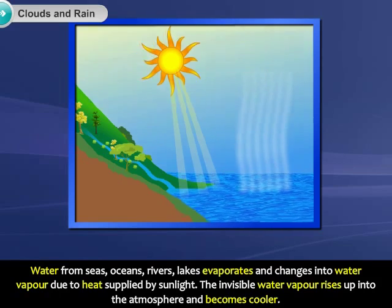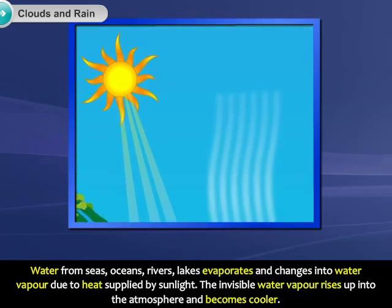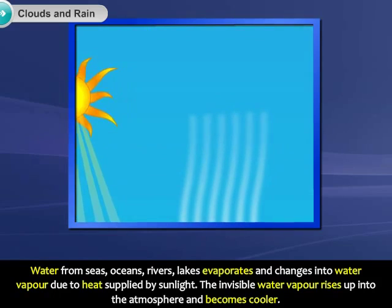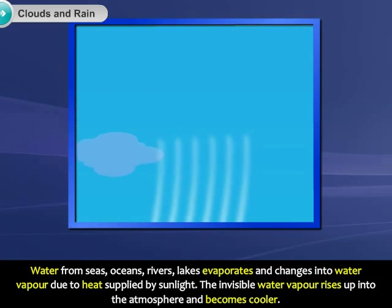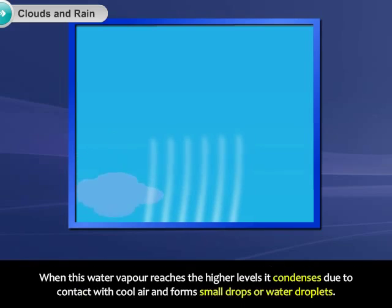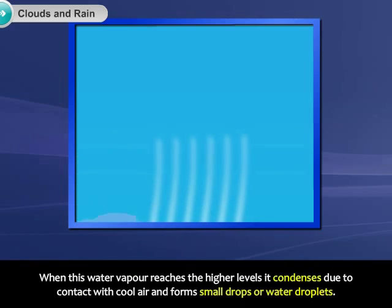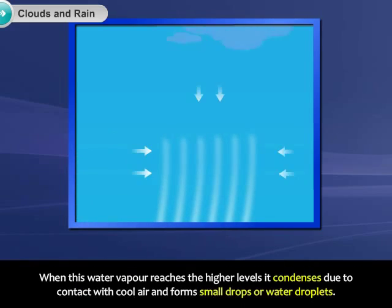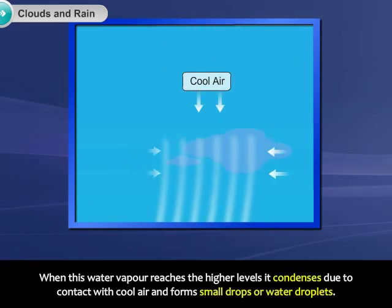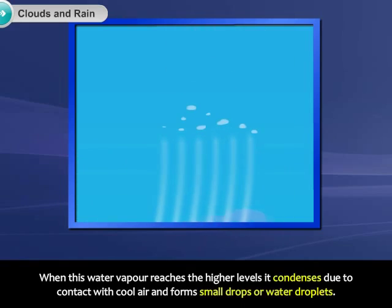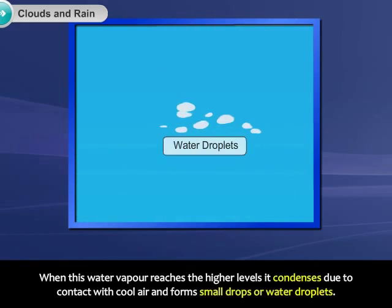The invisible water vapor rises up into the atmosphere and becomes cooler. When this water vapor reaches the higher levels, it condenses due to contact with cool air and forms small drops of water droplets.